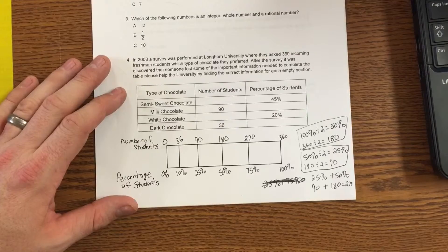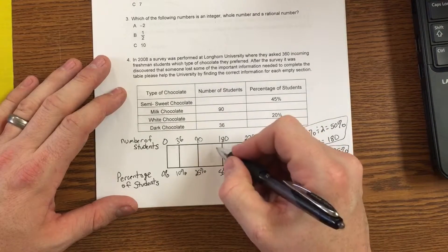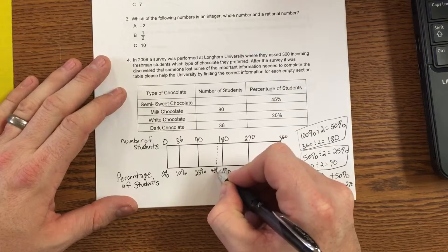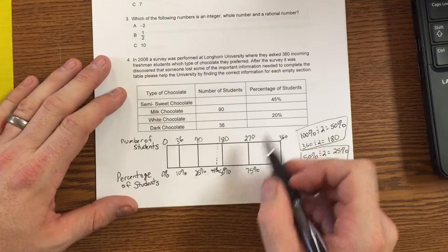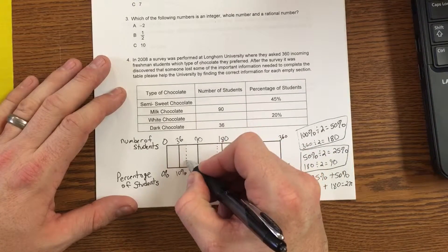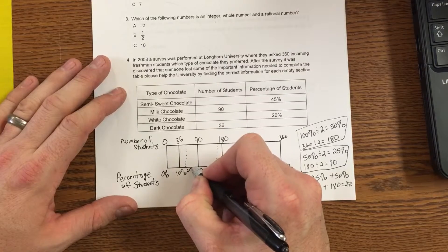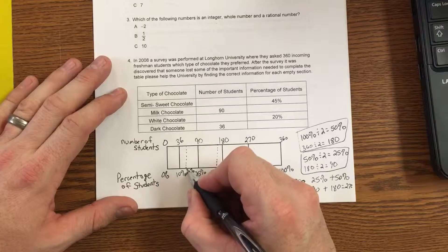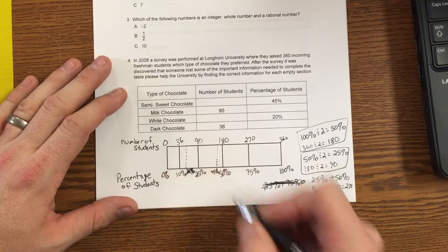Now, right off the bat, I do not have a 45. So I'm going to put a 45 on here. I also do not have a 20. So I'm going to put a 20% on here.